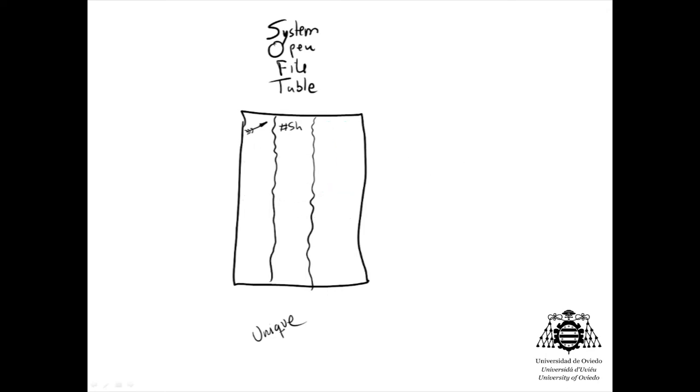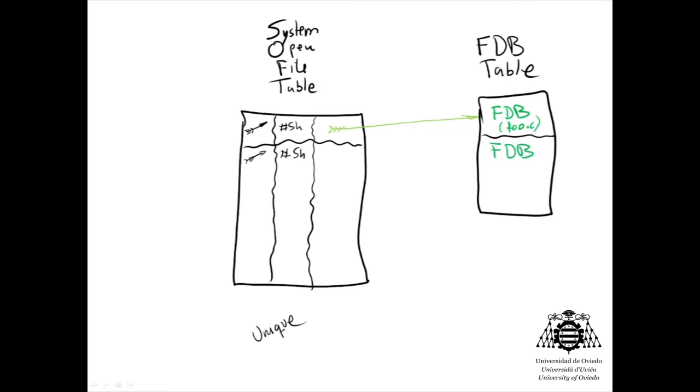That's why the file descriptor block table was invented: a unique table storing only once the file descriptor block of every open file in the system.